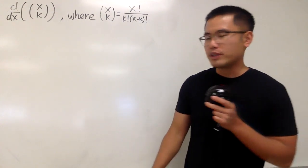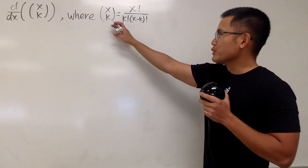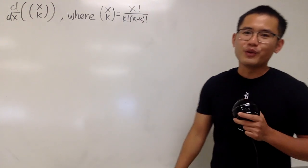Okay, let's do some math for fun. Here, we are going to differentiate x choose k with respect to x. And of course, x choose k is the binomial coefficient, and here is the definition for it.